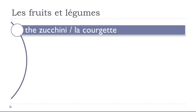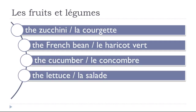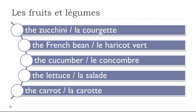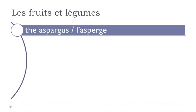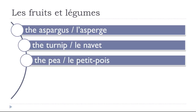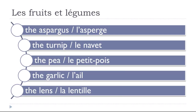Now les légumes — vegetables: la courgette (zucchini), le haricot vert (green bean), le concombre (cucumber), la salade (lettuce), la carotte (carrot), l'asperge (asparagus), le navet (turnip), le petit pois (pea), l'ail (garlic), la lentille (lentil).